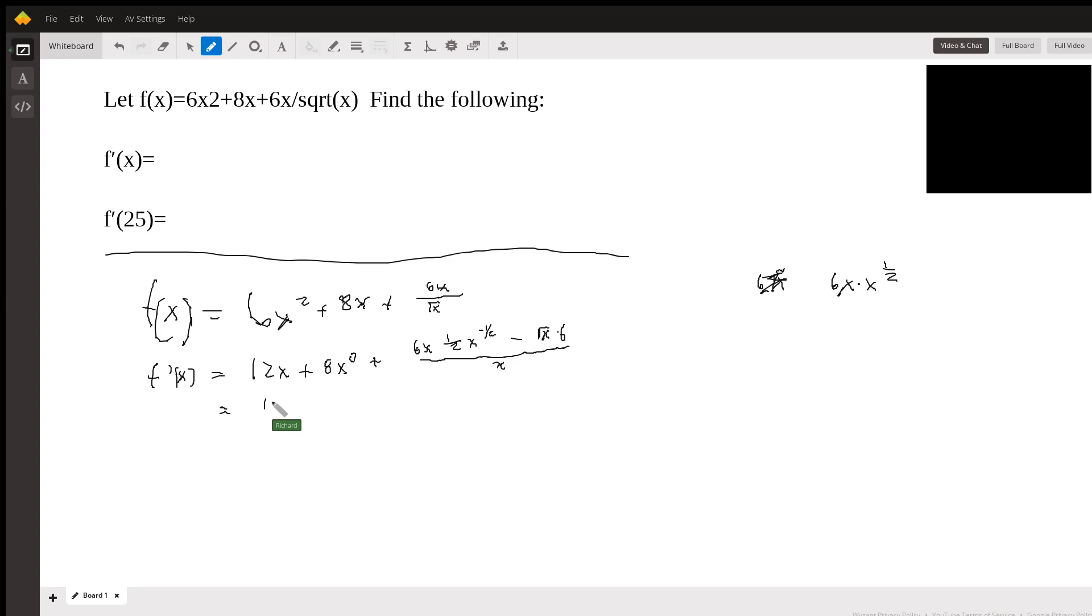So let's clean this up. So we have 12x plus 8 plus we've got 3. Let's just do the constant. It's going to be 6 times 6 times a half, which is 3. And x times x to the negative 1 half minus 6x to the positive 1 half, all over x.